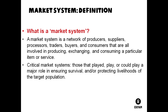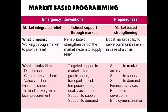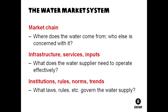A market system is a network of producers, suppliers, processors, traders, buyers and consumers producing, exchanging, and consuming a particular service or item. In the WASH sector that could be water trucking, sludging services, or consumer items such as soap and sanitary products. For a critical market — say a water market in Nepal or Yemen — we examine three layers: the market chain (from consumer to producer), infrastructure/services/inputs needed to operate it, and the rules and trends that govern that water supply.